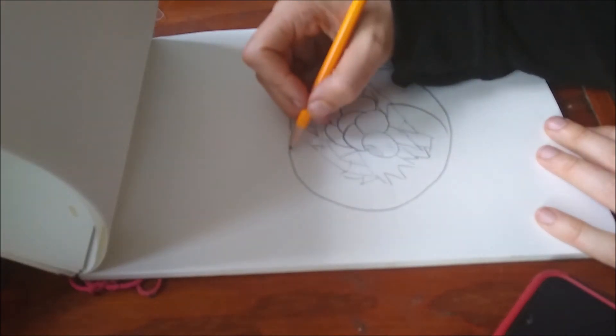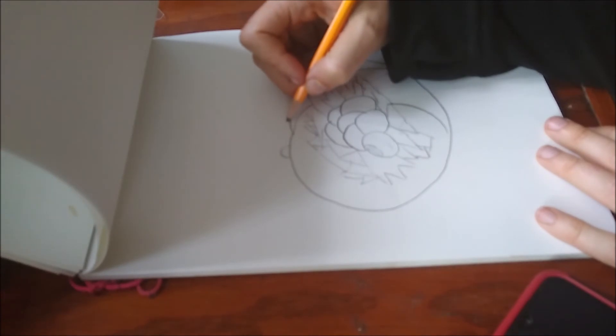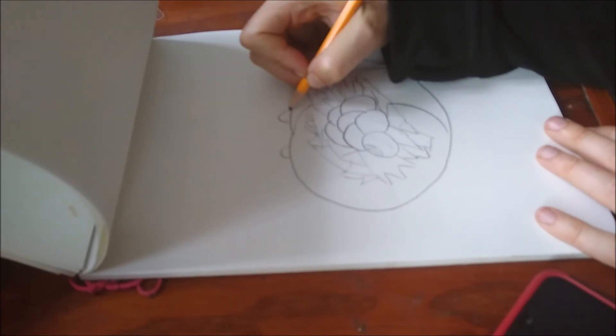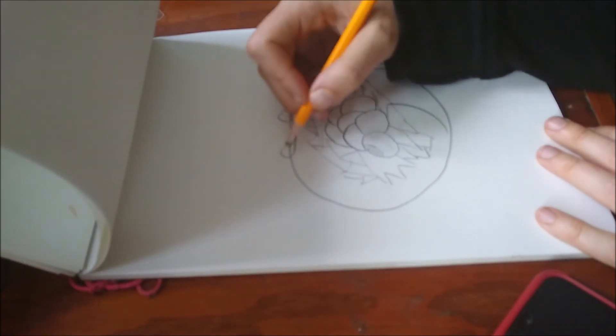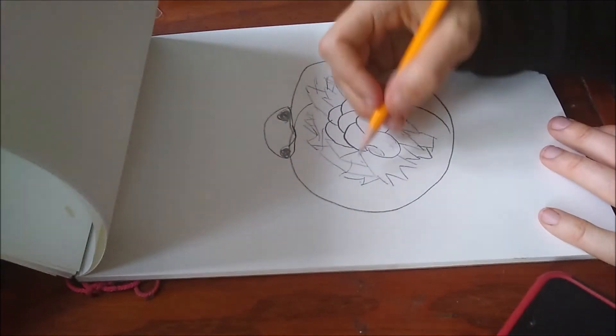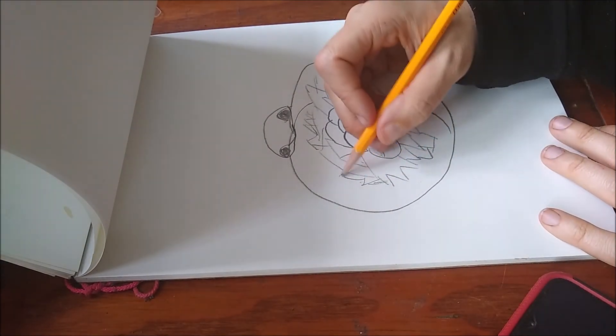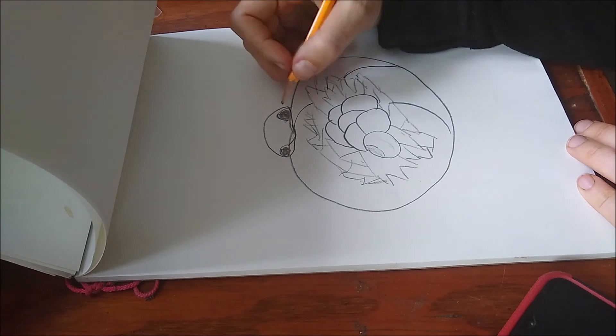Now just draw one arc over here and one arc over here and kind of draw a round mouth and a big arc over there. And there you have a mommy snake coiled around her baby.